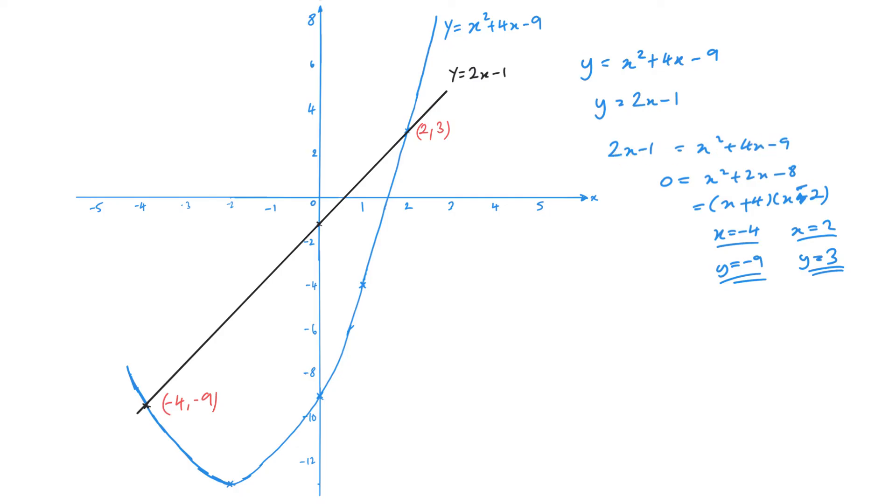If I took x squared plus 2x minus 8 and used the discriminant, I can see that I've got 4 minus 4 times 1 times minus 8, and we get 36. Positive number, therefore two solutions. You always have the discriminant as an option to check.